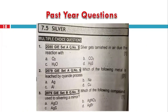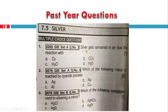Silver gets tarnished in air due to reaction with H2S in the environment. Silver is called a noble metal because oxygen, carbon dioxide, and water do not affect it. But in an H2S environment, it gets tarnished. Silver reacts with H2S to form Ag2S, which gives it a dull black color.